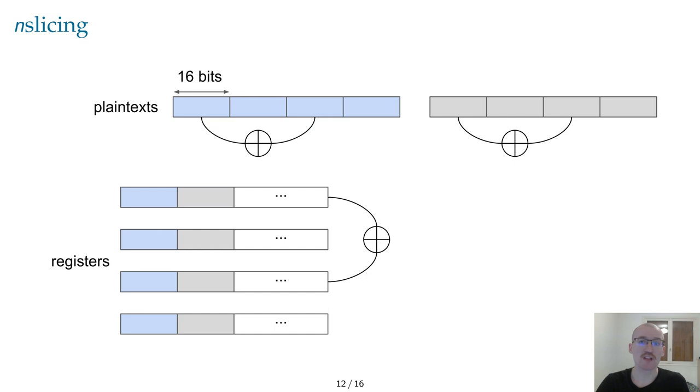The register-probing model is more realistic for N-slicing, since it assumes that a probe can retrieve a whole register, and thus gain information on multiple bits related to the same input at once. To analyze N-sliced code, we thus need the register-probing model extension of TightProof+.